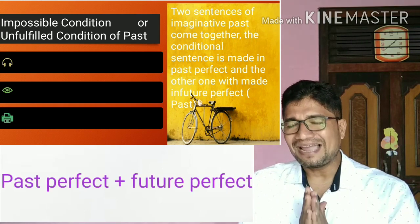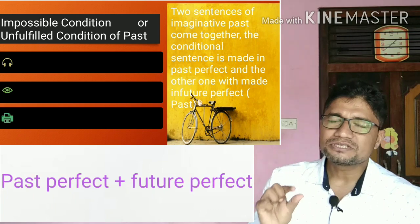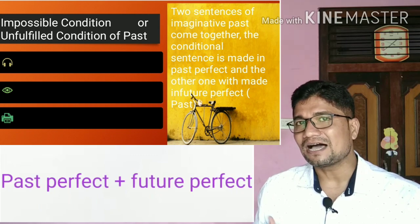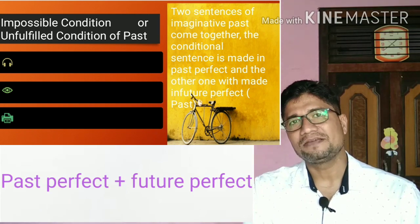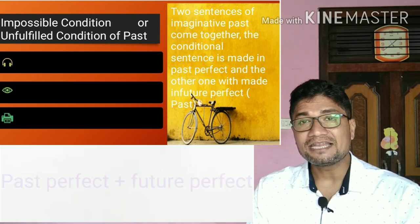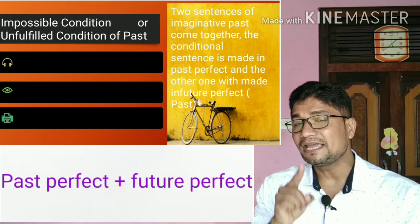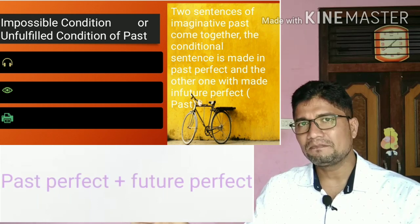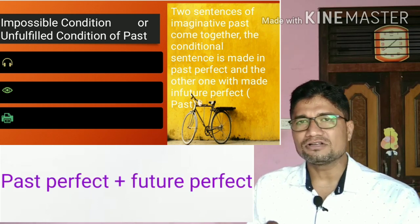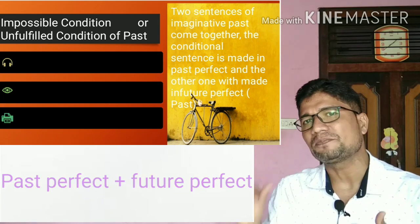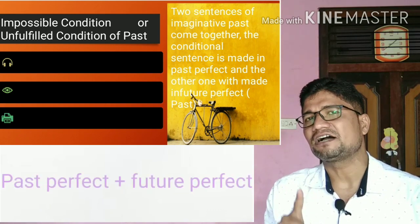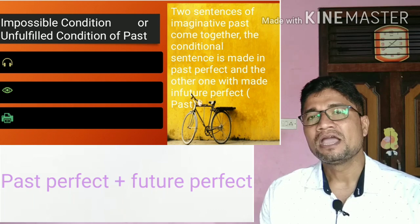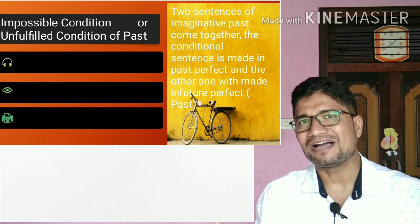How do we construct these sentences? The condition-based sentence is mostly made in past perfect. For example: 'If he had come to me, I should have taught him.' The first sentence 'If he had come to me' is in past perfect, and the other 'I should have taught him' is in future perfect — but again, instead of 'will' we use 'would,' instead of 'shall' we use 'should,' instead of 'can' we use 'could,' and instead of 'may' we use 'might.' Let's see more examples.